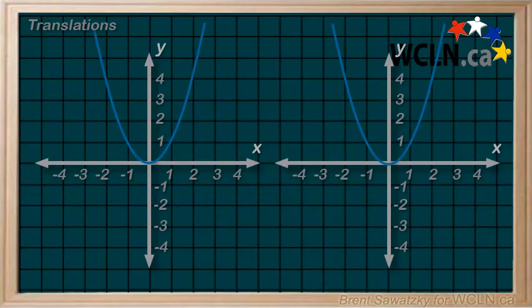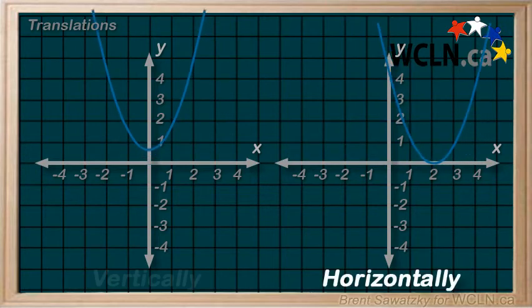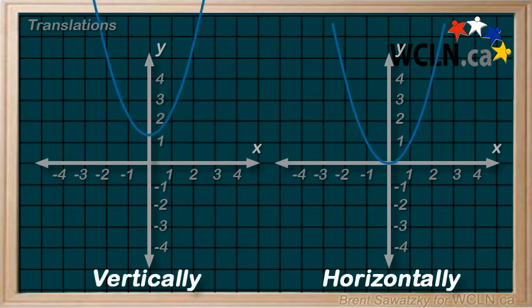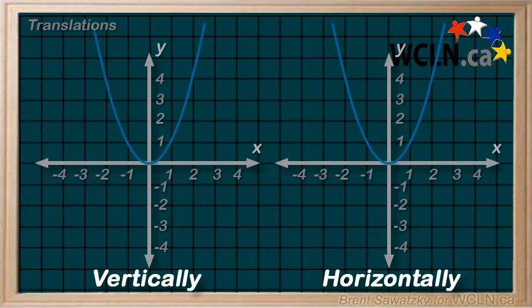Translating a graph simply means to shift the graph horizontally and or vertically, and all the parts of the graph shift together as a unit.